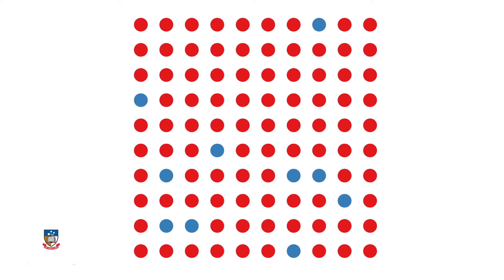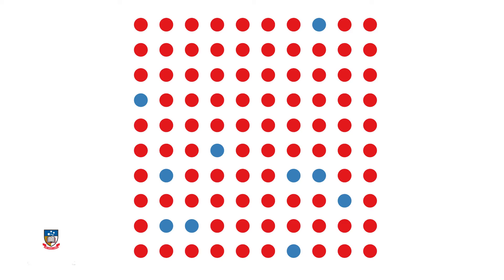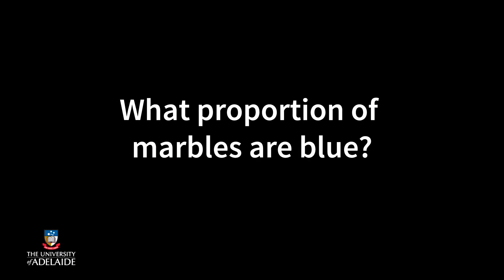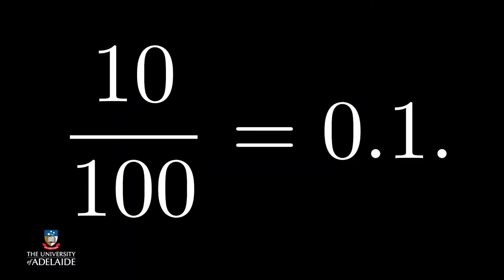I'm going to use hypothetical marbles illustrated here. This is our population. By population, I mean all the subjects we are interested in. In this case, the subjects are the marbles, and there are 100 of them. My research question for you is: what's the proportion of the marbles that are blue? This is easy. You count the blue ones — 10 marbles — and the total number of marbles — 100 marbles — and you calculate the proportion as 10%.